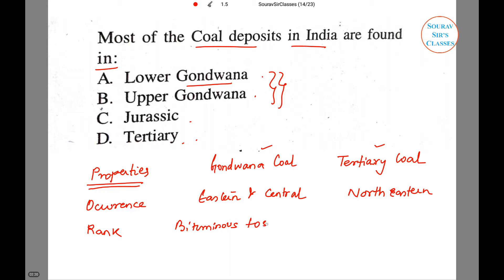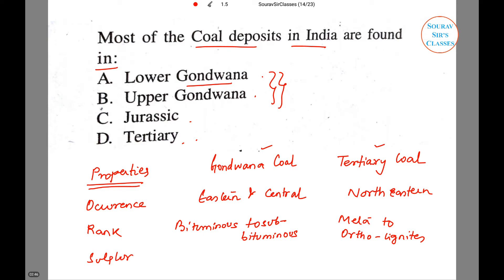The second property is rank: Gondwana coal can be bituminous to sub-bituminous. Now let us talk about sulfur content, which is very important for any type of coal. In Gondwana coal it is low, however in tertiary coal the sulfur content is very high.